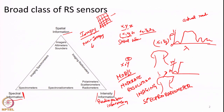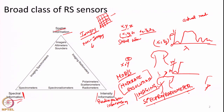Just look at the name: 'moderate resolution' deals with the resolution of the feature; 'imaging' means the sensor will provide a two-dimensional image; 'spectroradiometer' means the sensor collects data in different spectral bands and also collects the exact amount of energy coming out. So it is both a spectrometer and a radiometer — it is an imaging spectroradiometer. It does all the jobs: spatial information, spectral information, radiometric information.